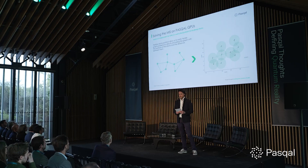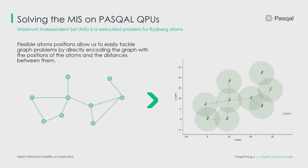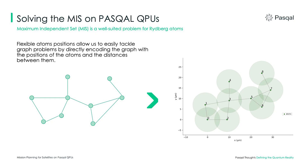It appears that neutral atoms are good at finding maximum independent sets. Thanks to a highly flexible architecture, we can change the shape of our quantum register from one quantum program to the other, and we can directly reproduce the connectivity of a graph with our atoms. This is a really powerful feature and makes our devices well-suited for treating graph problems in general, and this problem in particular.